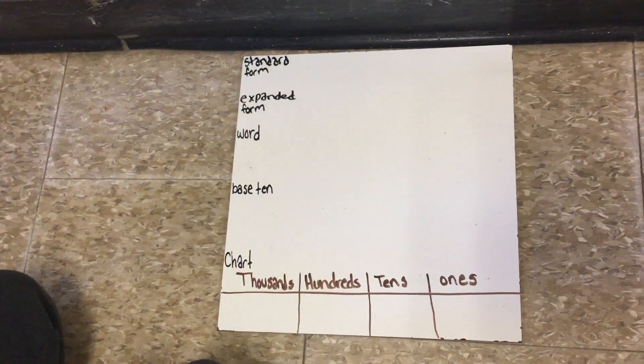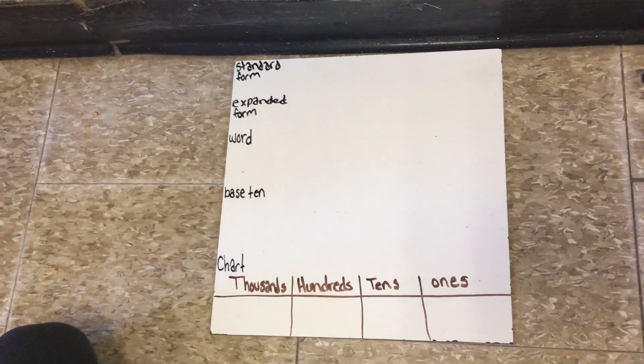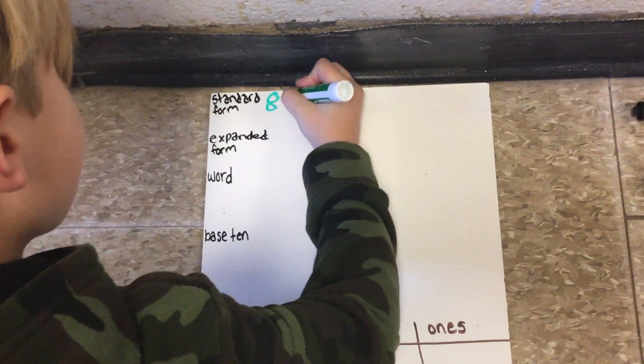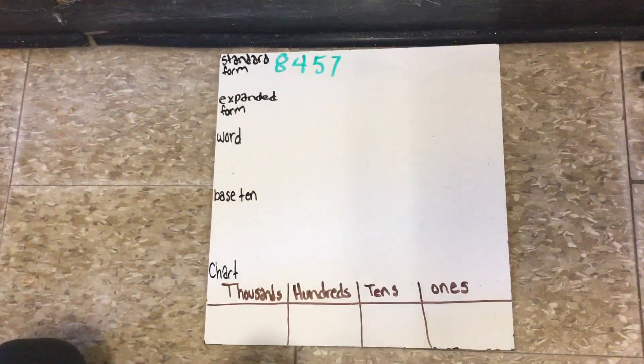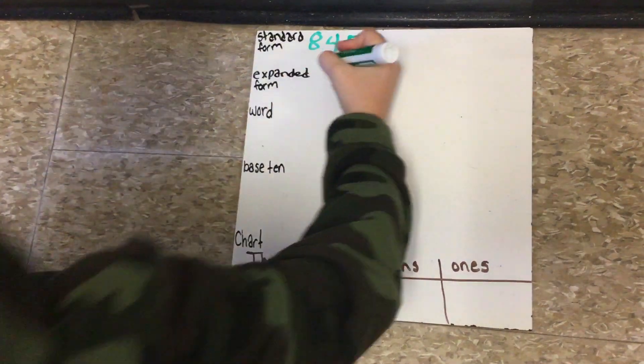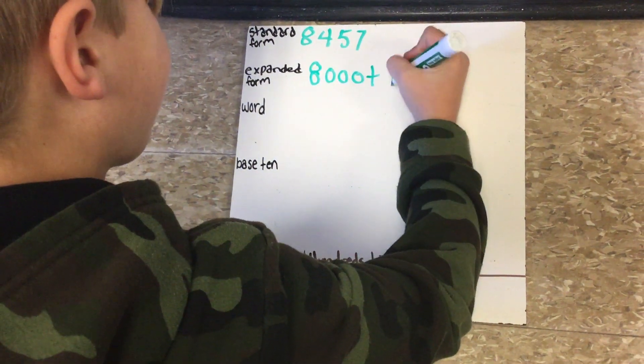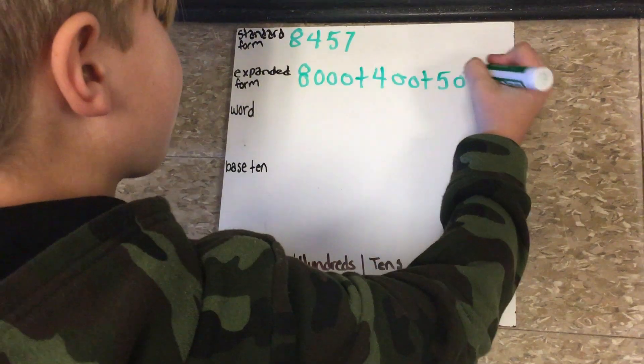The number we are using is 8,457. In standard form it looks like this. In expanded form you need to expand the numbers. It looks like this: 8,000 plus 400 plus 50 plus 7.